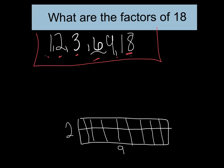Now, boys and girls, on your graphing paper I would like you to draw the array for the factors 3 and 6 to make 18. So if we have 3 times 6 equals 18, draw the array — you would have 3 rows with 6 tiles in each row, or you can have 6 rows with 3 tiles in each row. Go ahead and draw the array for 3 times 6 on your graphing sheet. Go ahead and do this now.